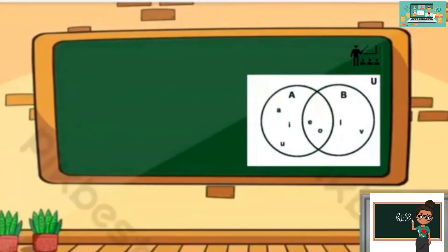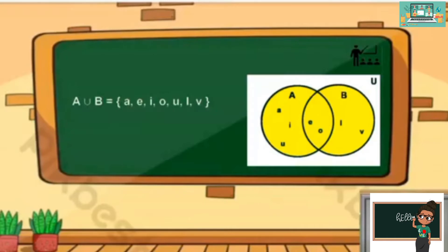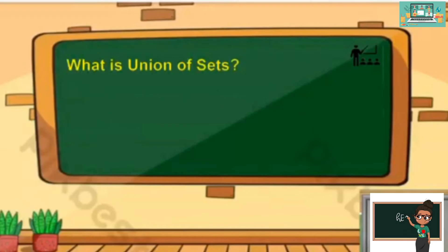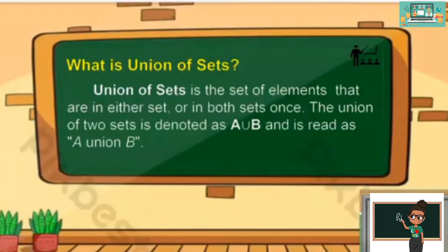Now, if we shade this part, that is A union B. A union B consists of elements A, E, I, O, U, L, and B, and the cardinality is 7. Union of sets is the set of elements that are in either set or in both sets. The union of two sets is denoted as this symbol and is read as A union B.